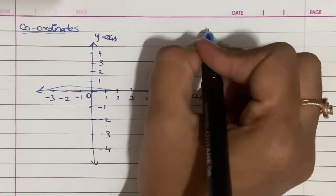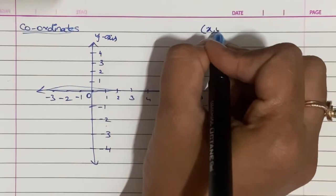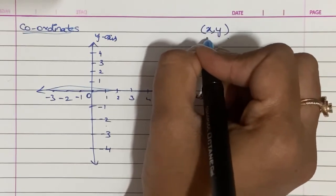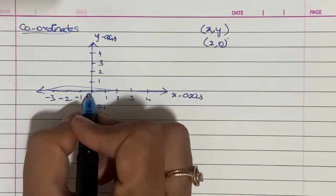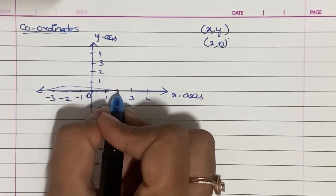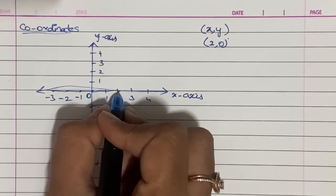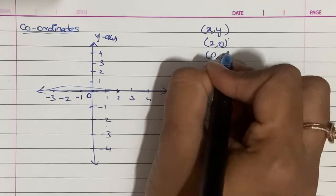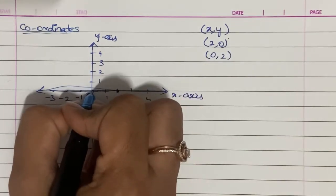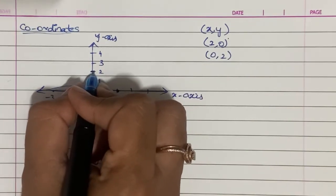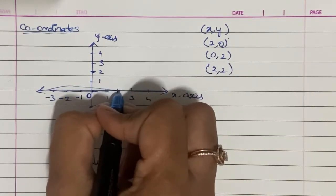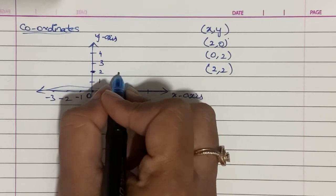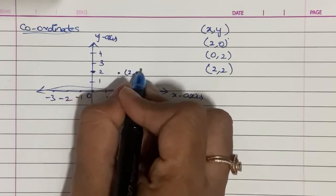Now I will show you how to plot points. Suppose x and y are the coordinates. Let us say this point is (2, 0) — x is 2 and y is 0, so it lies on the x-axis. Next, suppose we have the point (0, 2) — x value is 0, y is 2. The point lies on the y-axis at y equals 2.